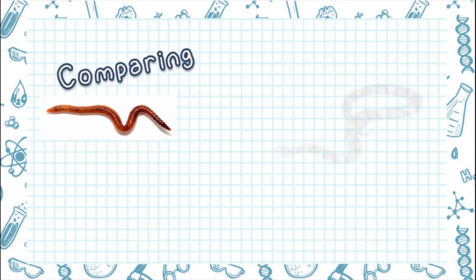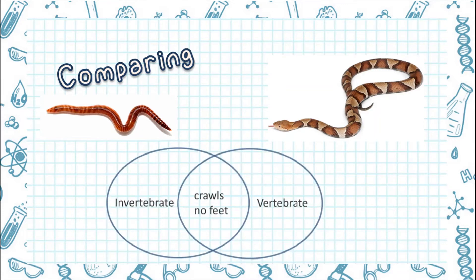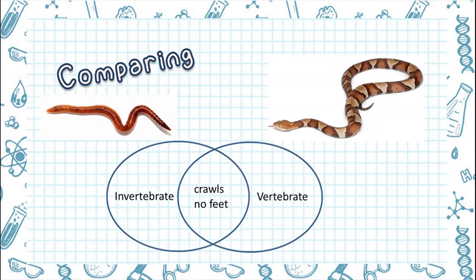Look at these two pictures. How are you going to compare a worm and a snake? In this part, we can use a Venn diagram. A worm and a snake are similar in that they both crawl and they don't have feet. They are different because a worm is classified as an invertebrate, while a snake is classified as a vertebrate.